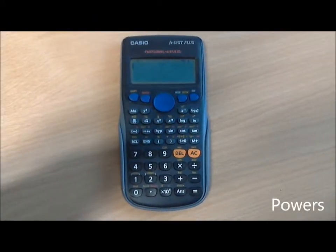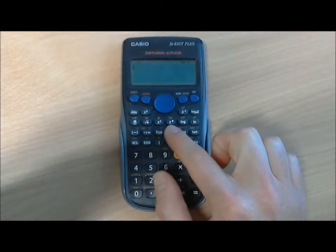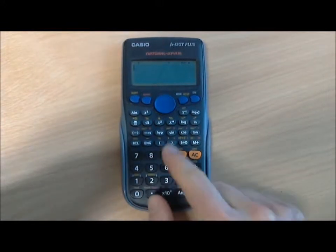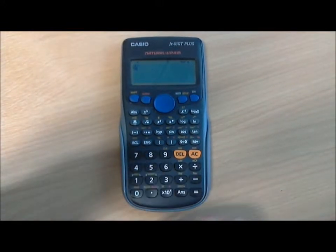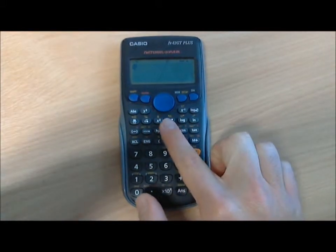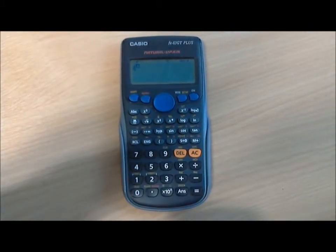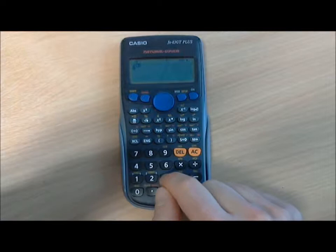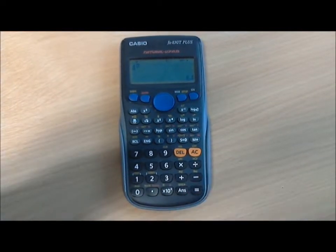To get a power on your calculator, you use the x to the power button. For example, if you want to get 4 to the power of 3, which is 4 by 4 by 4 equals 64, you press 4, then the power button, enter your power of 3, and hit equals. As you can see, you get 64.